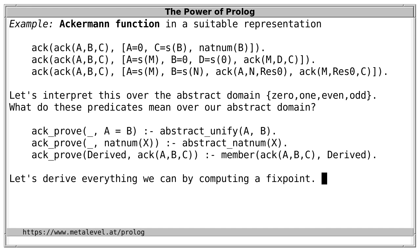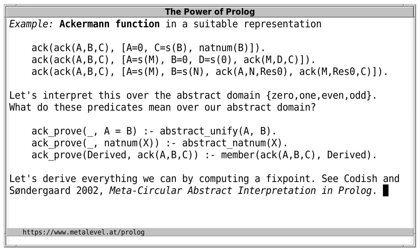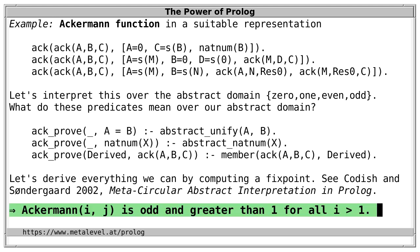I'll refer you to a publication by Codish and Søndergaard for more information about this idea. They show that in total we obtain an interesting arithmetic fact about the Ackermann function: the result is odd and greater than 1 in all cases where the first argument is greater than 1 — which is not obvious from the definition. A concrete interpretation cannot derive this because there are infinitely many cases, but we can derive it by abstract interpretation because over this domain the number of cases is finite.